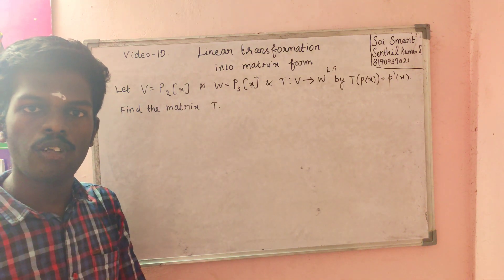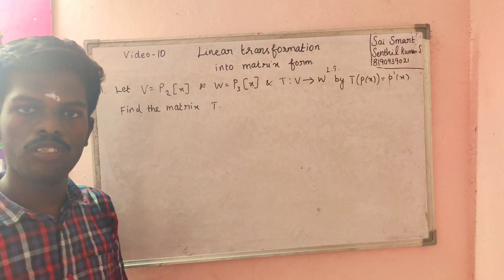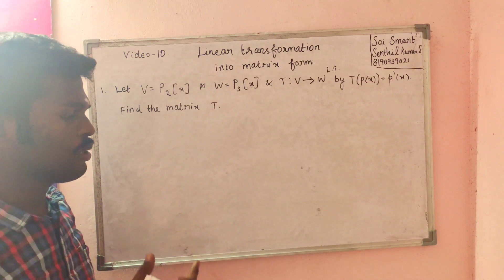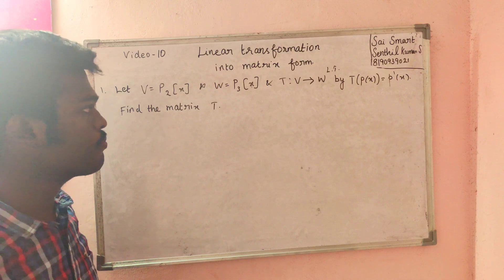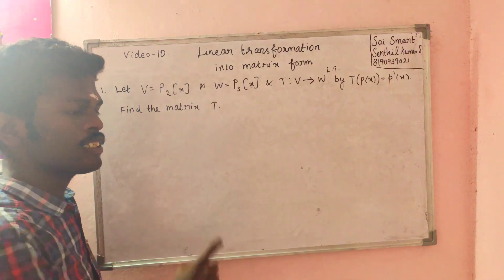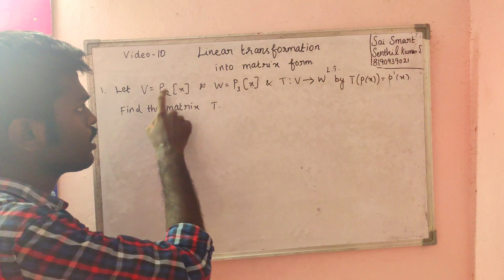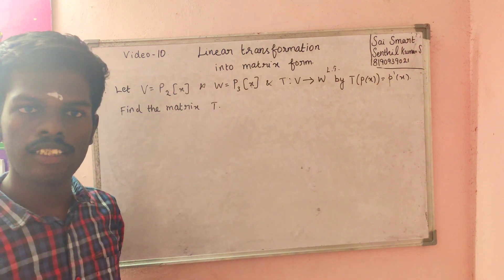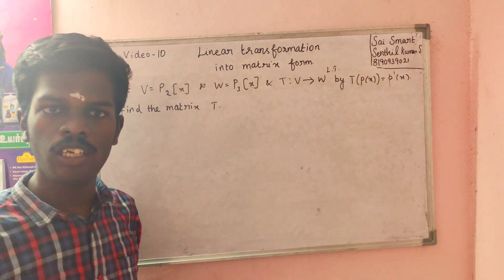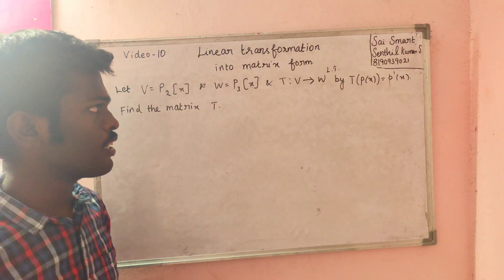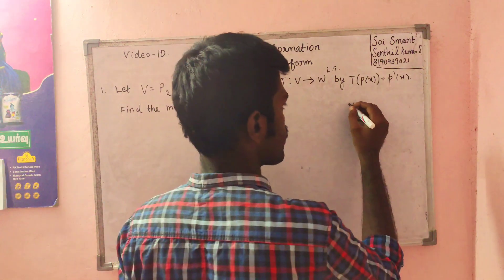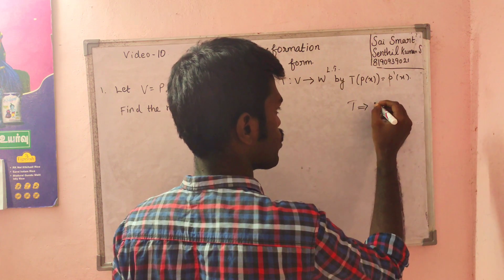The matrix is defined by rows and columns. The matrix is defined by L_T — that is, the matrix from V to W. The matrix one is defined by L_T.